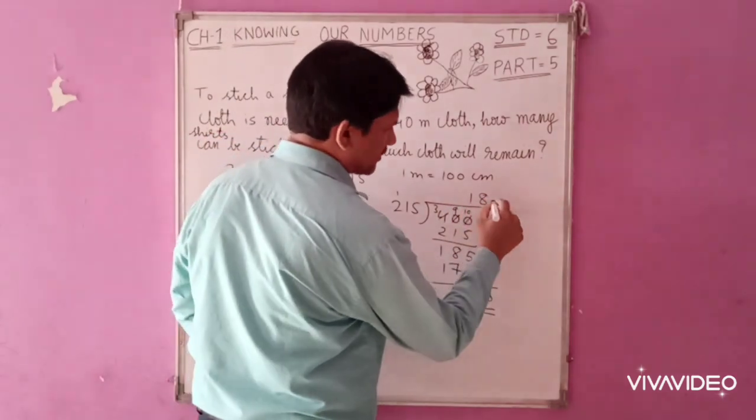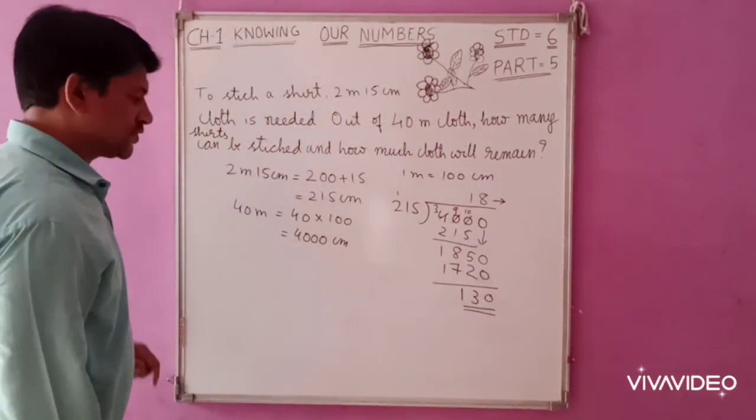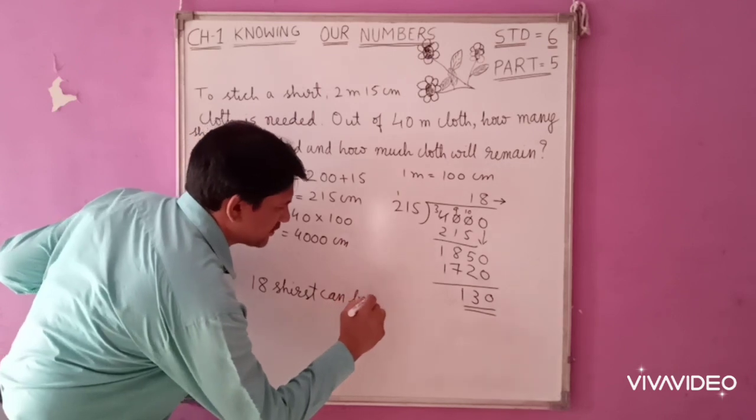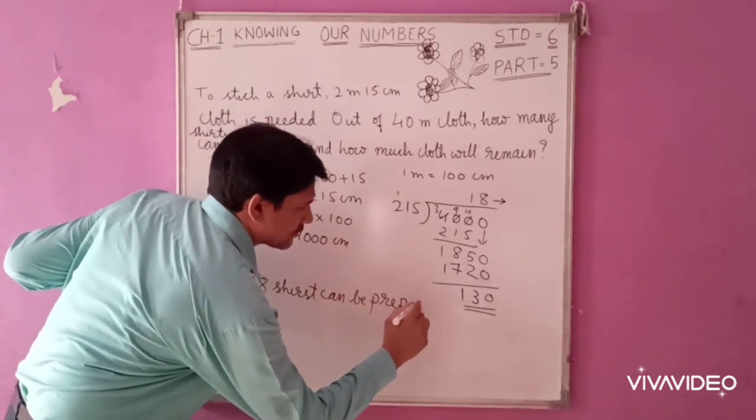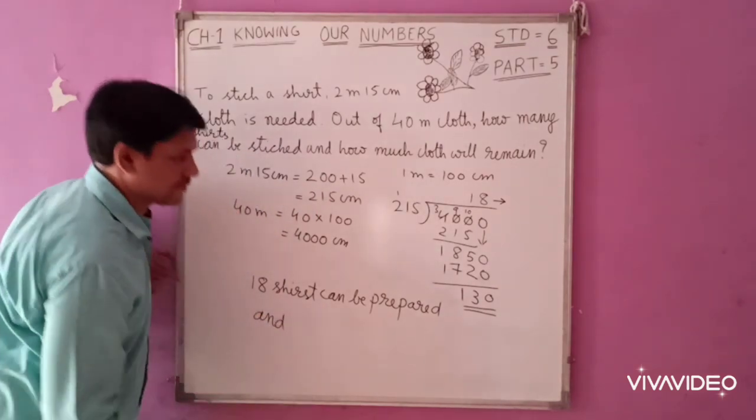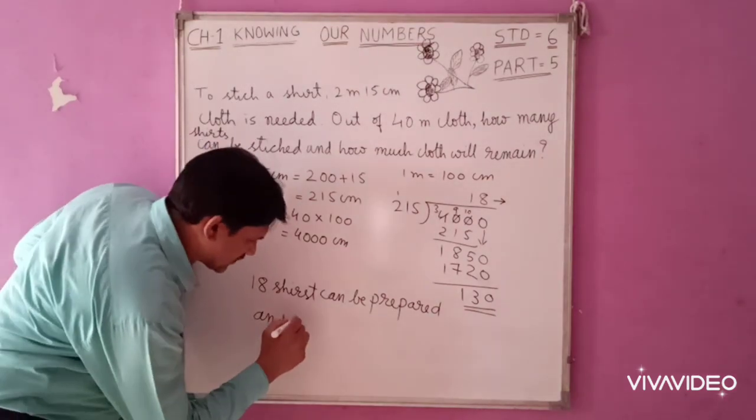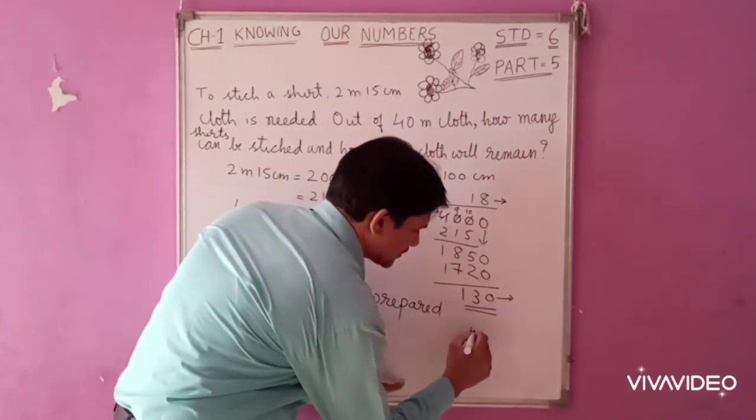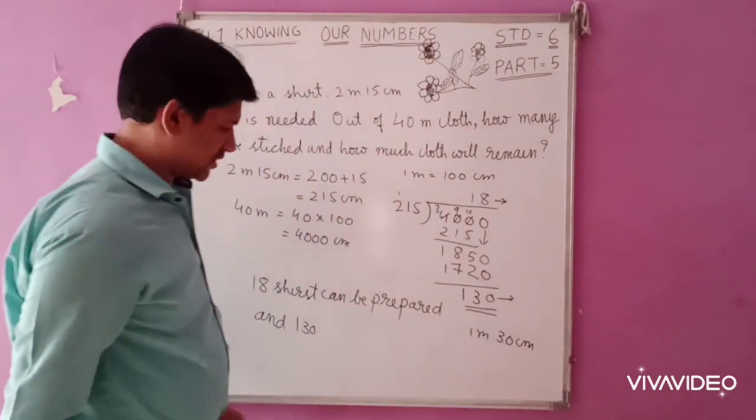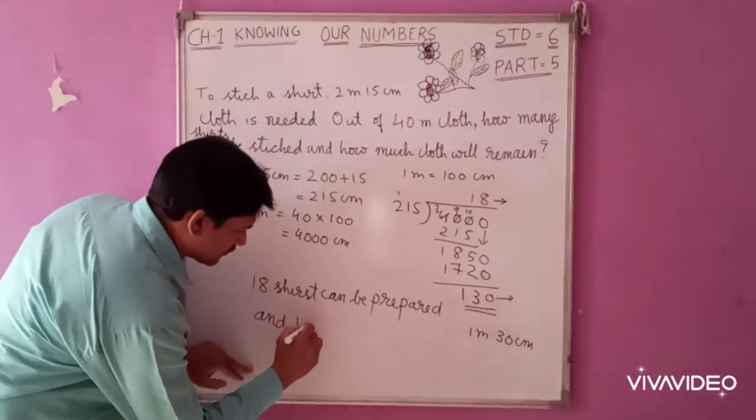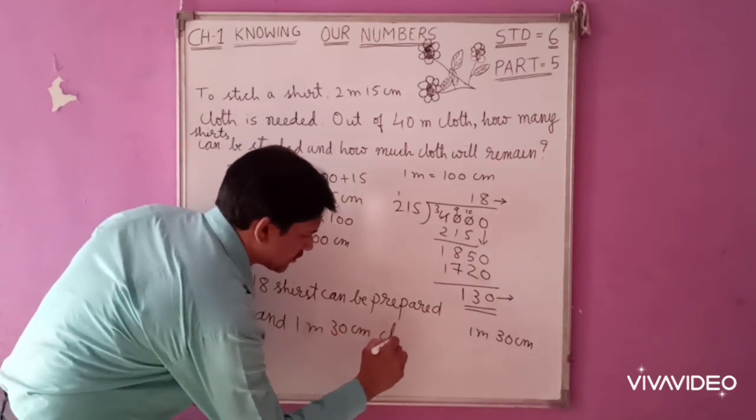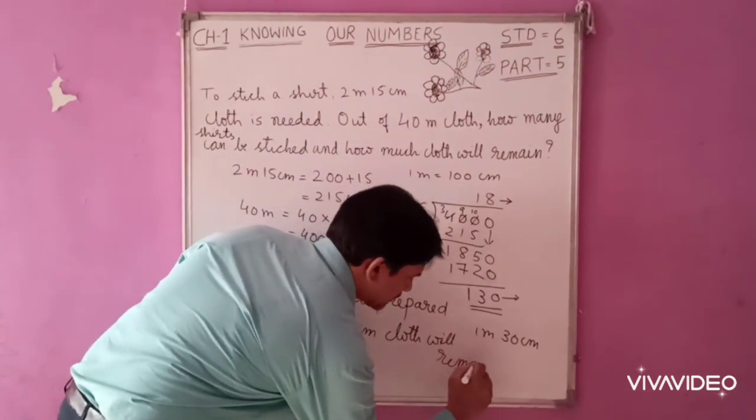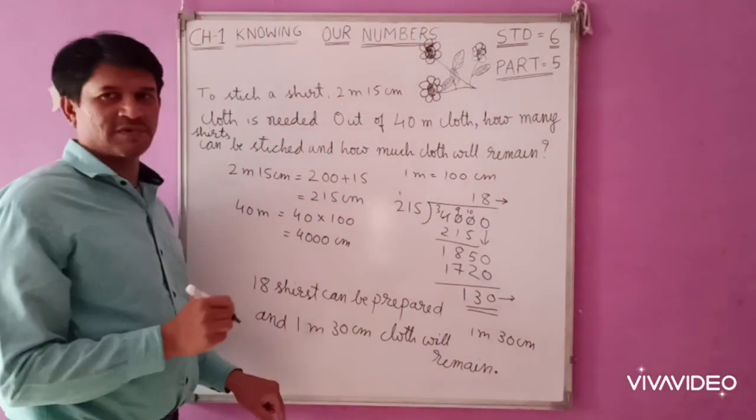How many shirts can be prepared? The answer is 18 shirts can be prepared. And how much cloth will remain? 130 centimeters. You can convert this into meter and centimeter, that is 1 meter 30 centimeter cloth will remain.